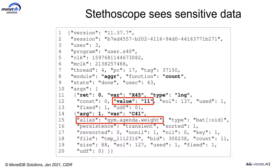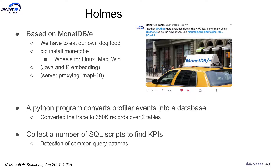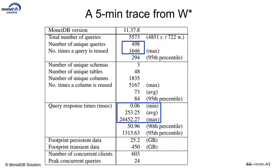So what we have to do as a first approach is to mask out all that sensitive information. In the first project with our customer, we proposed to mask out all this information and provide us with at least one sizeable trace of an actual running system used by real users. We got a trace of 350k records, dumped it into a MonoDB embedded version, and developed a number of SQL scripts to find the key KPIs. Be aware — this is a very rough approach, so we only have full masking of all the information.